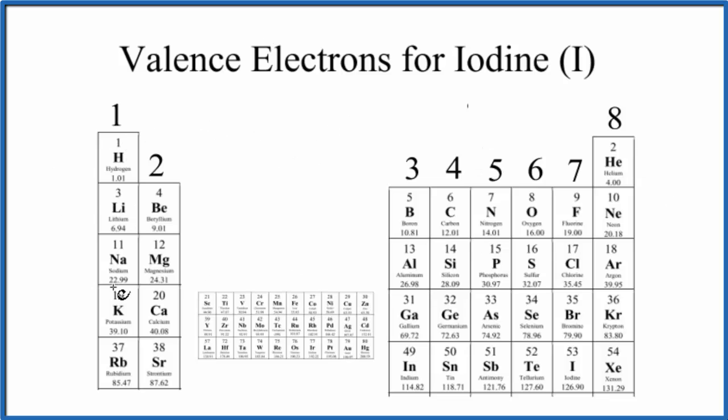So if we look at the periodic table, group one here has one valence electron. All of the elements in group two, two valence electrons.